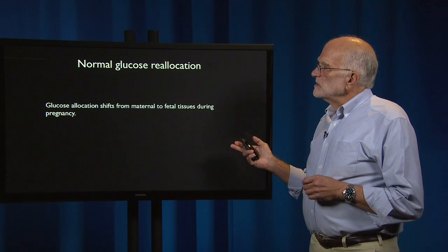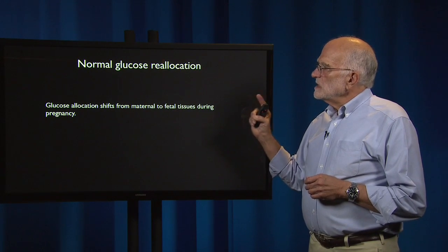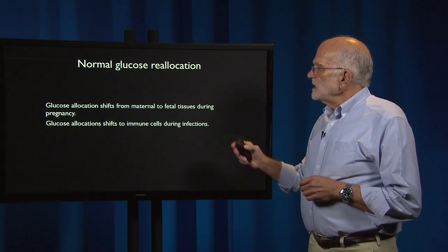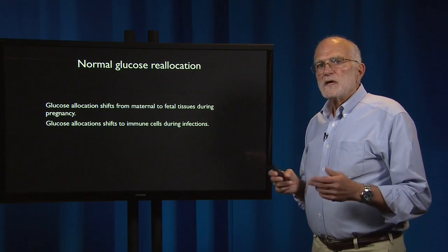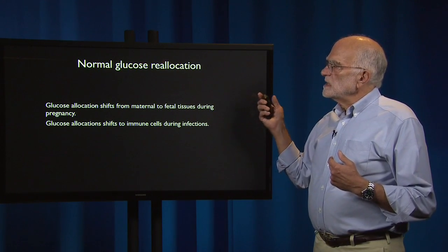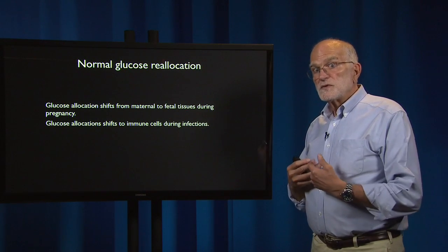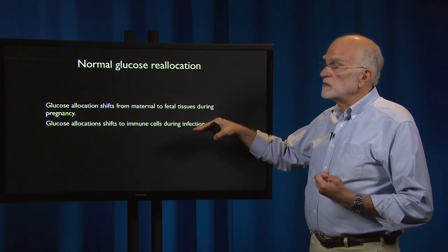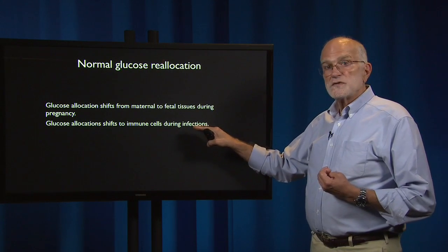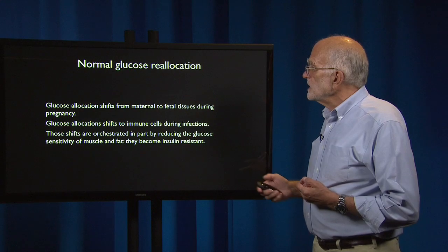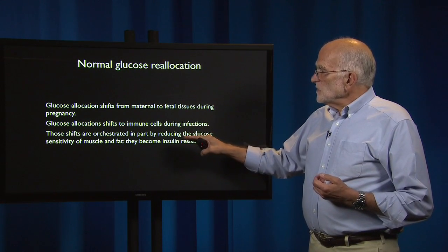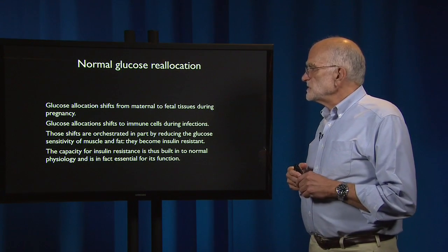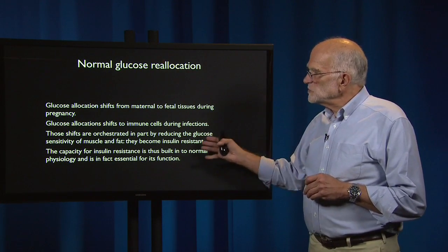In reallocation there are several important effects. Glucose allocation will shift from maternal to fetal tissue during pregnancy, and it will shift to immune cells during infections. Insulin resistance in muscle and fat cells — so that they won't take up glucose — allows glucose to shift from the maternal blood to the fetal blood during pregnancy, and from muscle and fat into immune cells during infections. This is orchestrated by decreasing sensitivity in muscle and fat, and the capacity for insulin resistance is built into normal physiology and is essential for its functions.